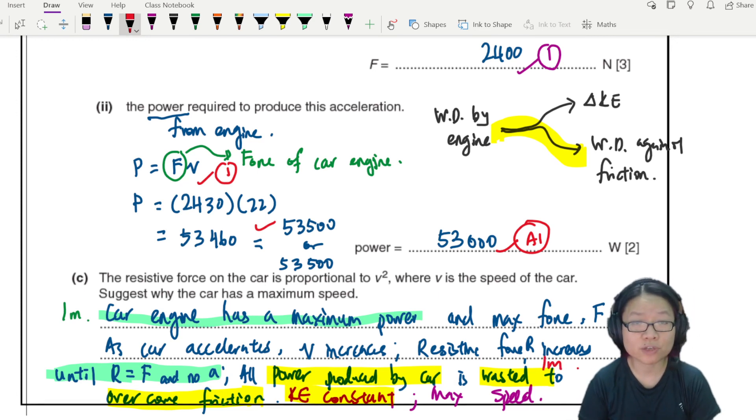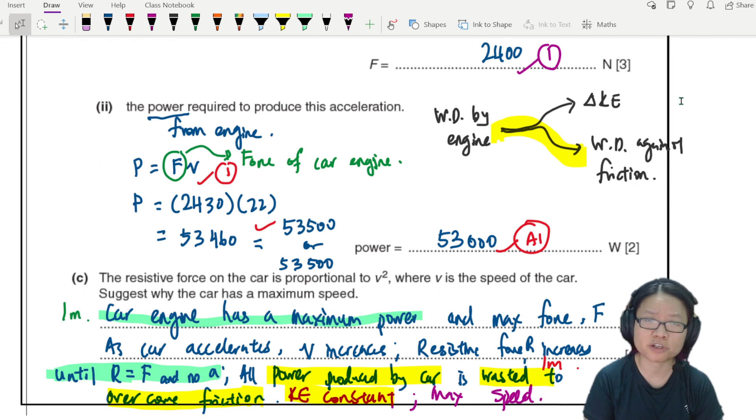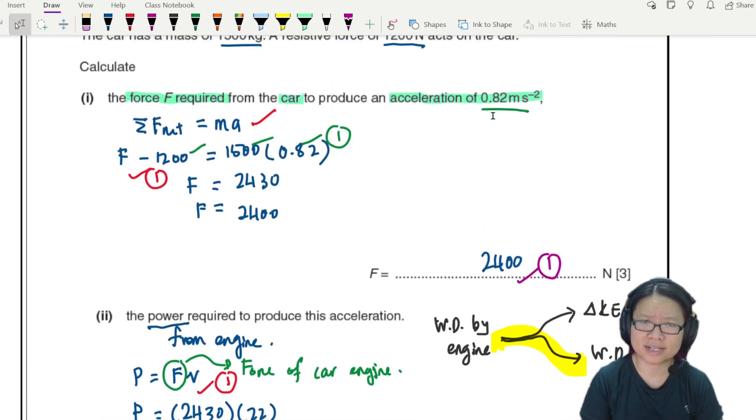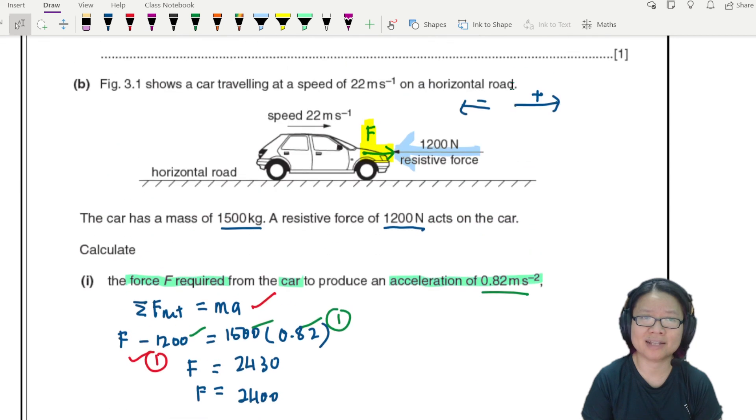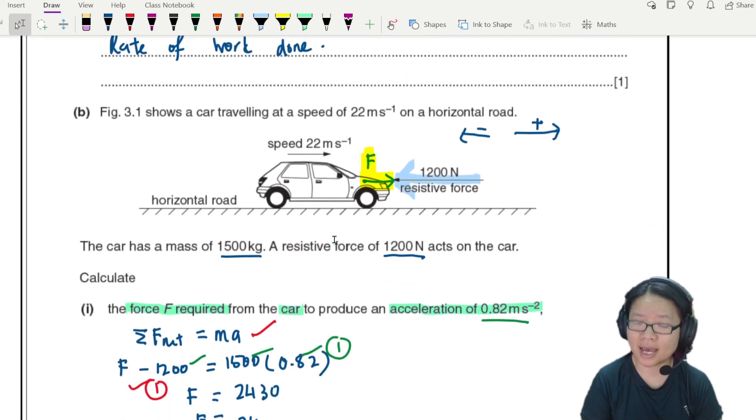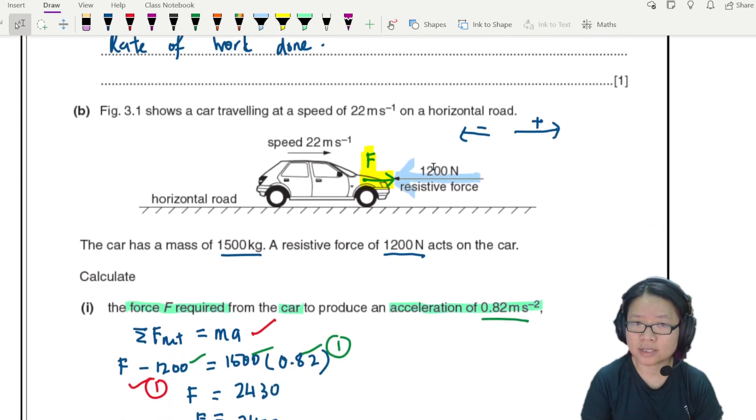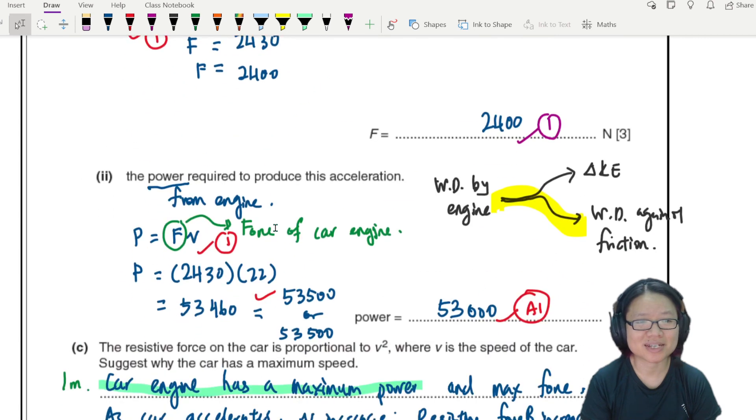That's it for this question. Remember when you use P equal to FV, it's always a shortcut, especially it depends on the information given by the question. Especially like this kind of question where you don't really have any information about how far the car travels or even if the acceleration of the car is constant. This acceleration is only the acceleration of the car at this particular time. As the car travel faster, this 1200 will increase, this makes the acceleration decrease. This is an instantaneous power. That's it for this question. I'll see you in the next video. Take care now, bye-bye.